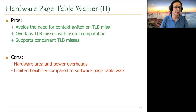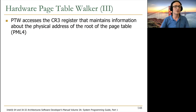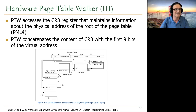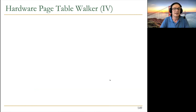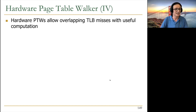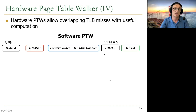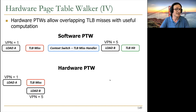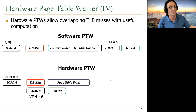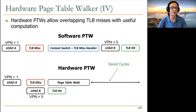The page table walk starts with the CR3 register, concatenates it with the virtual address, and walks the multi-level page table. This takes time, but the benefit is overlapping many TLB misses with useful computation. With software TLB miss handling, you'd context-switch to a handler and can't handle other TLB hits. With hardware page table walking, you can handle other TLB hits concurrently, getting full out-of-order execution benefits.